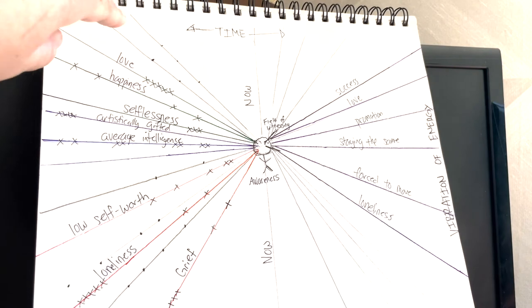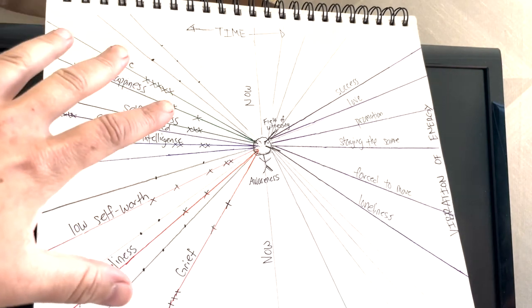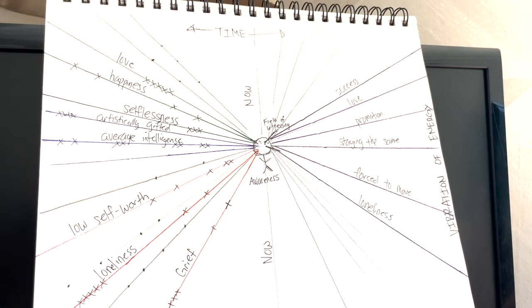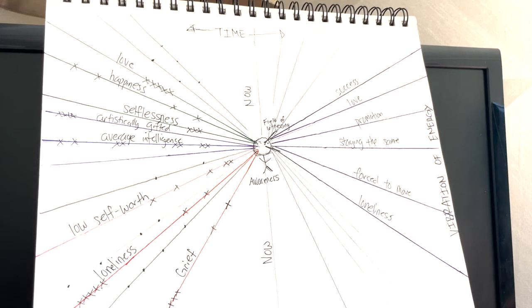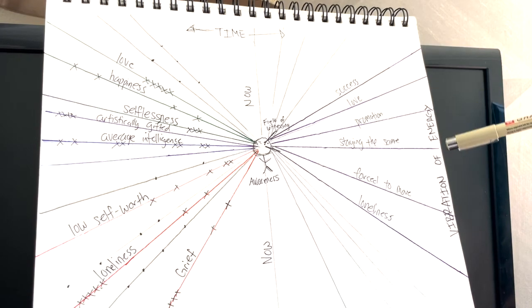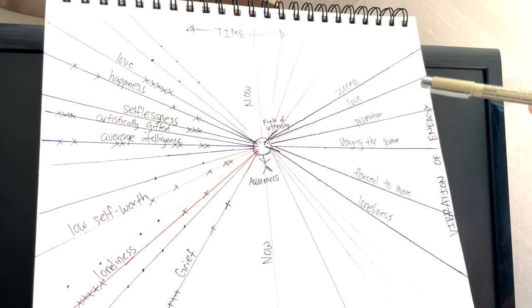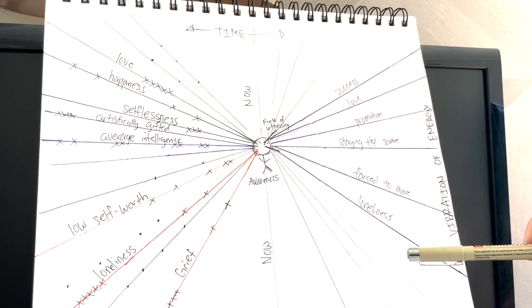This up here represents time. So this is supposed to be past, this is going to be present, and that's in the future, what we're trying to pull forward to us. On the side here, as we go up higher, we're raising our vibration of energy, and then these would be considered lower vibrations of energy.